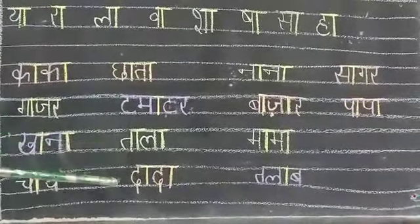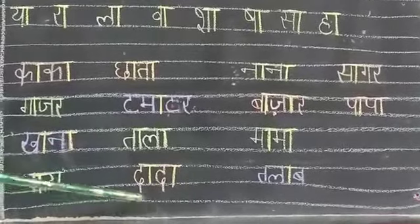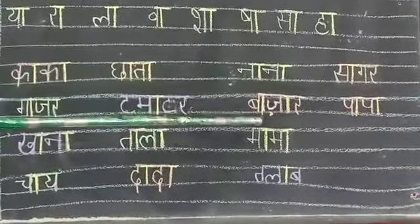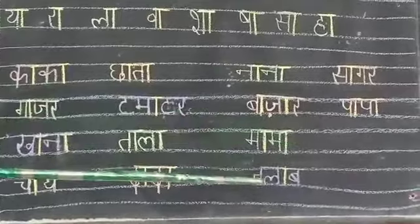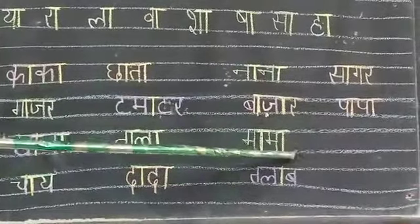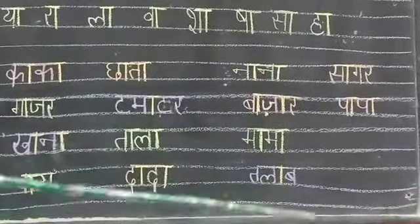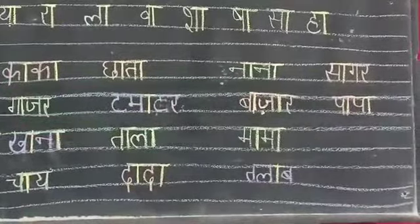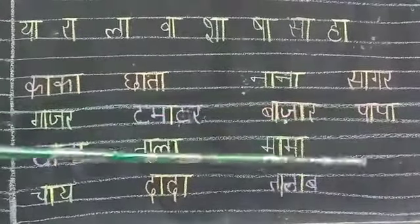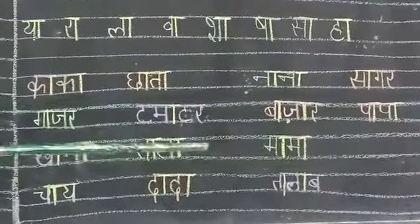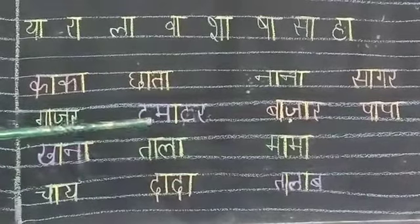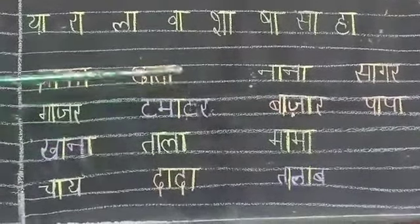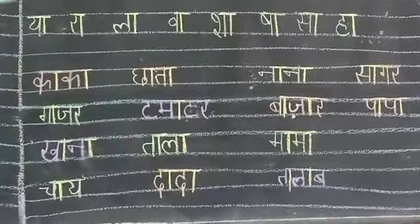See Tala - if I remove Aa-ki maatra, then it will be 'Tal'. So there is a lot of difference between the two words. More example words: Dada, Nana, Bazaar, Mama, Kalab, Sagar, Papa. A few more words we can make. I have made only a few but you can make more words by using this Aa-ki maatra.